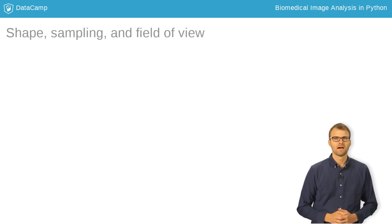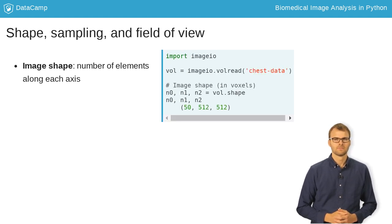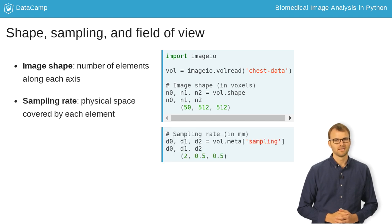When analyzing images, keep in mind that the data is only a representation of real, physical space. The information in your images is limited to the number of elements in it. This is known as the array shape in NumPy and is always available as an attribute.